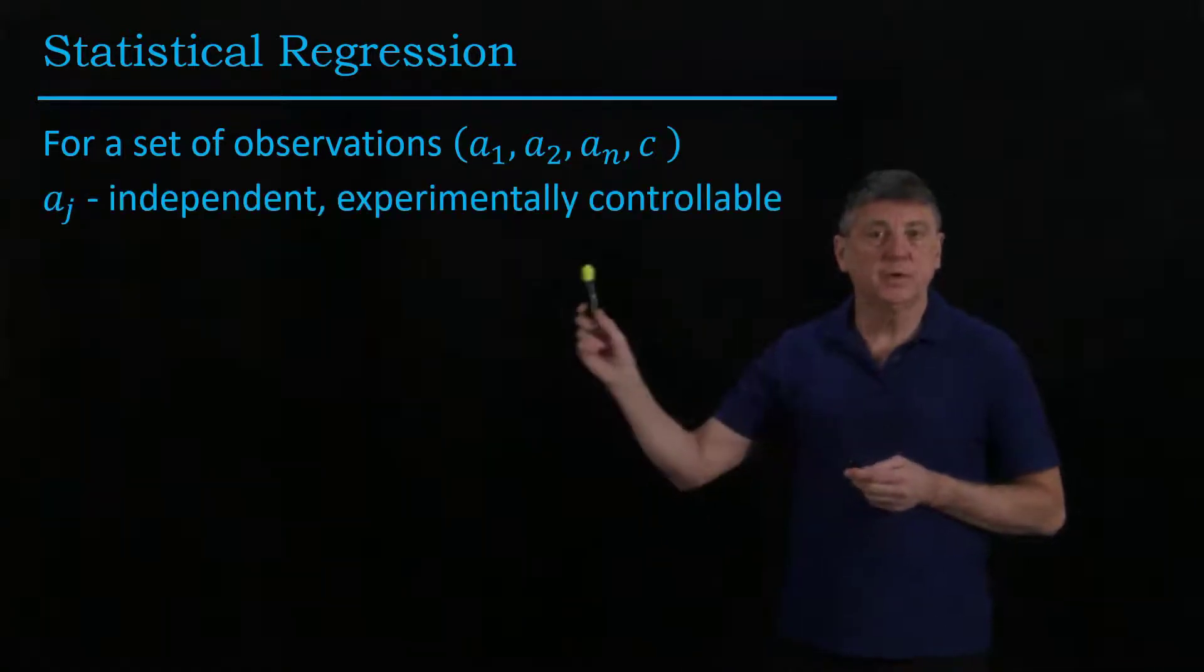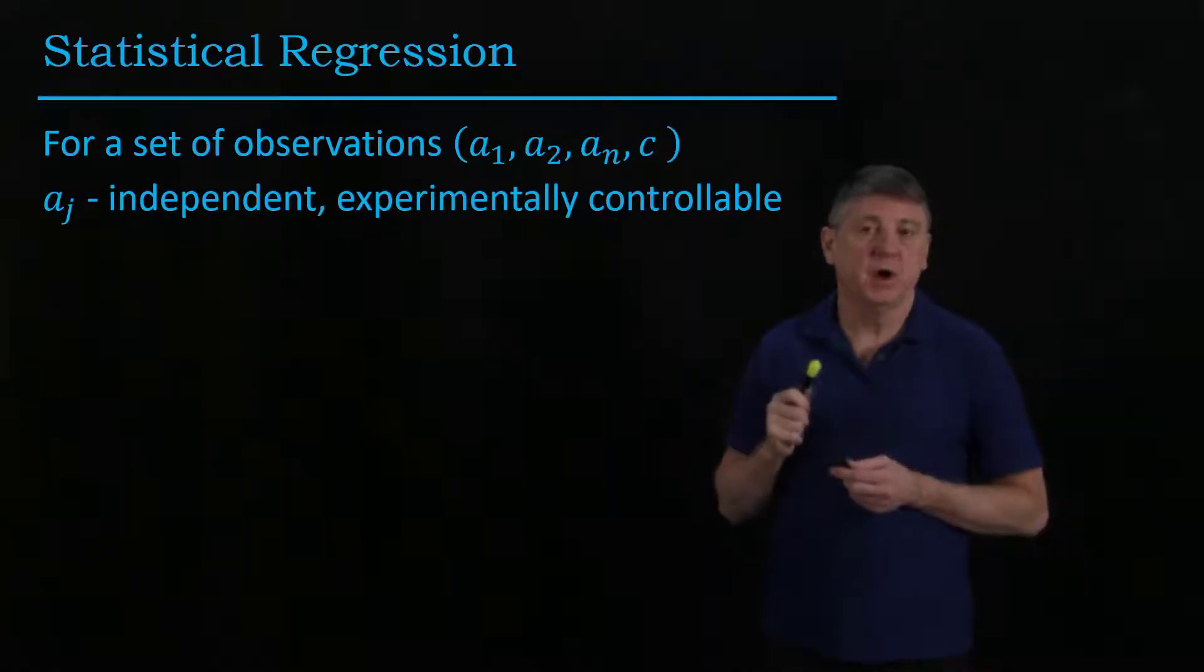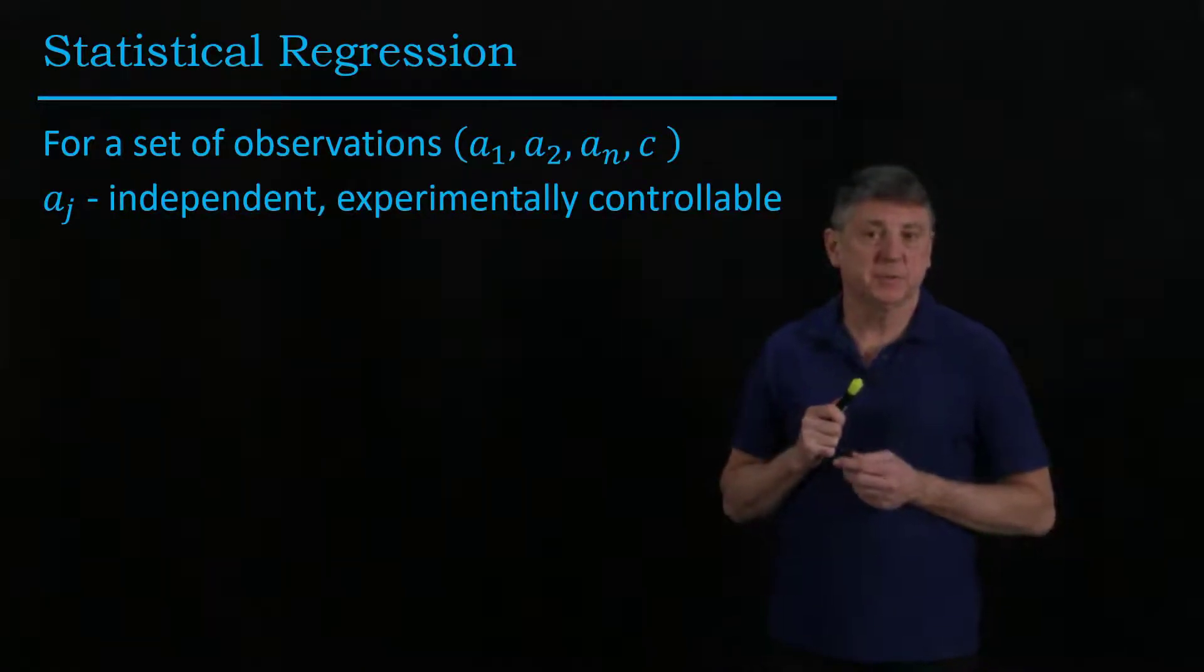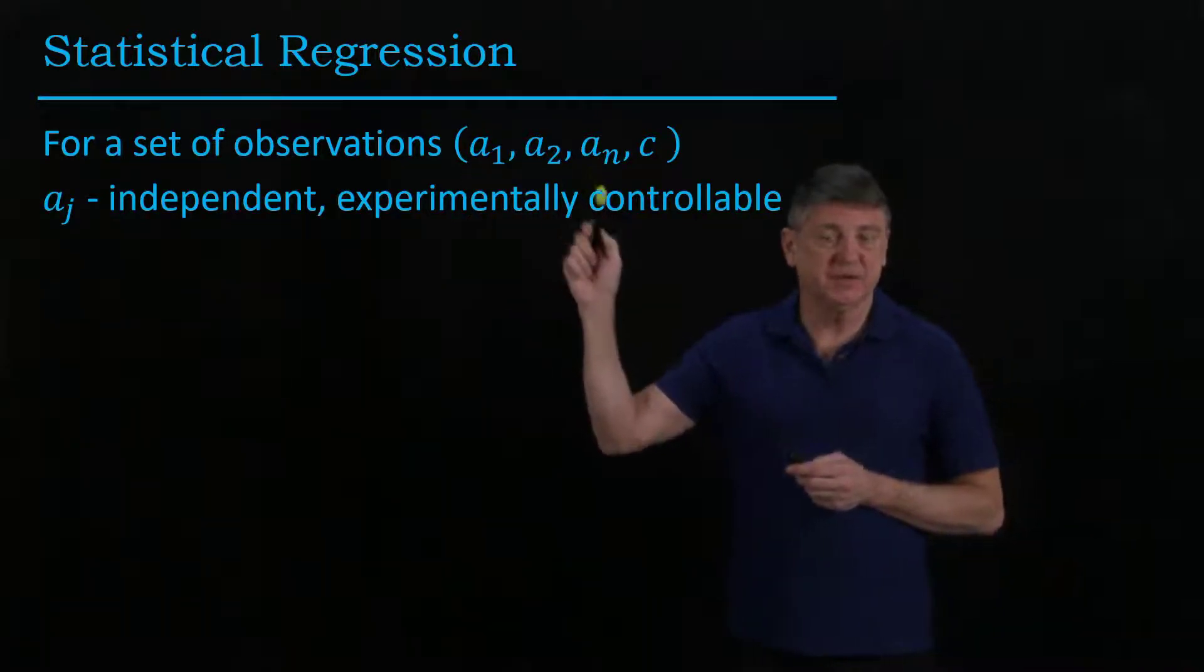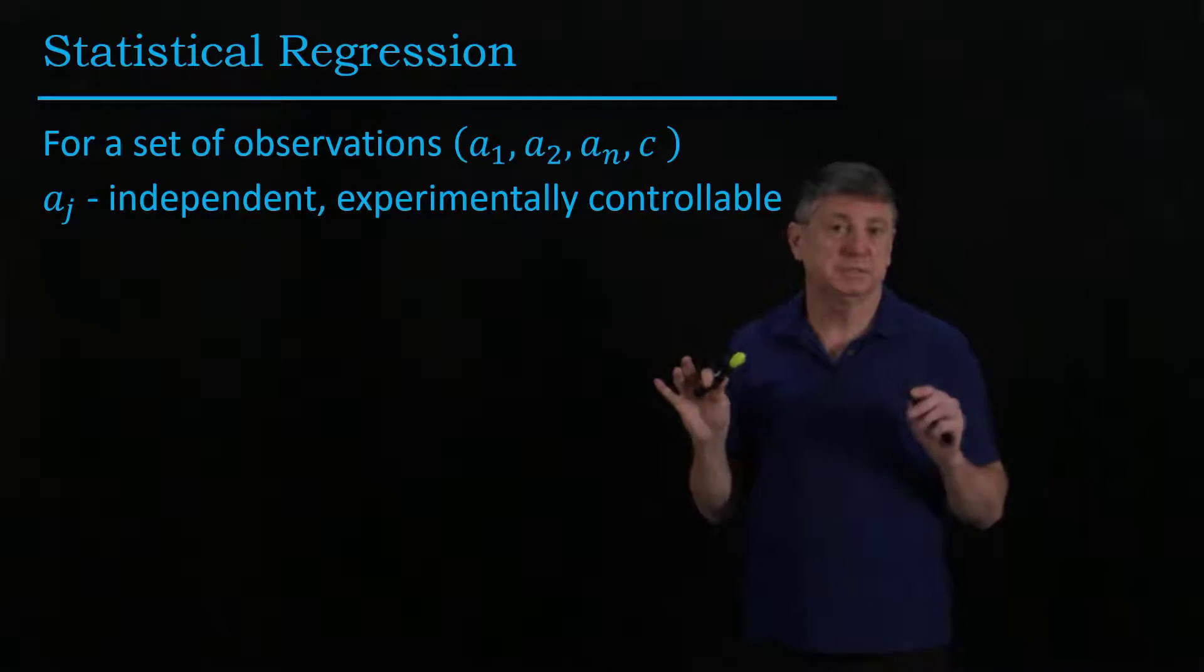And we're going to suppose that the A type are independent and experimentally controllable. They may not be statistically independent of each other, but they're independent in some sense.